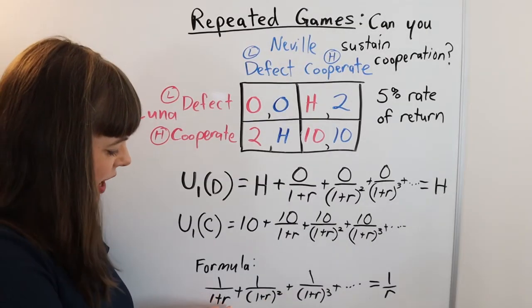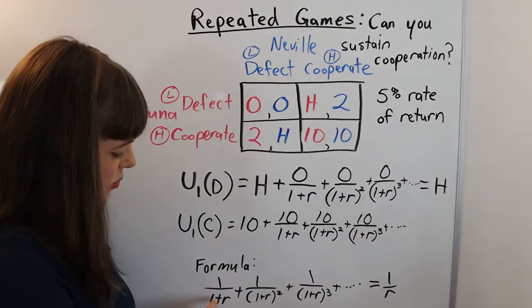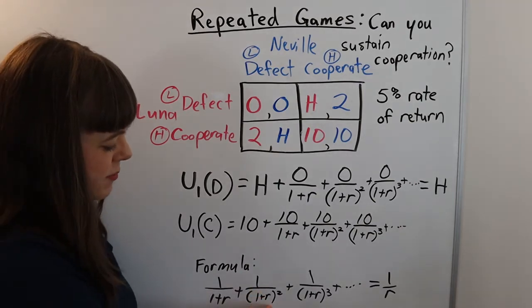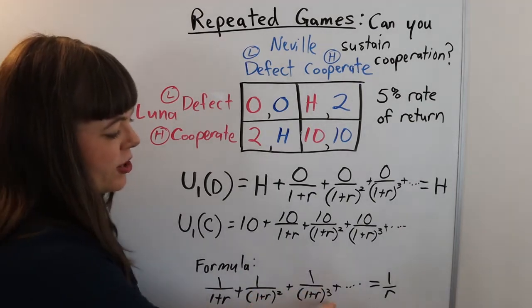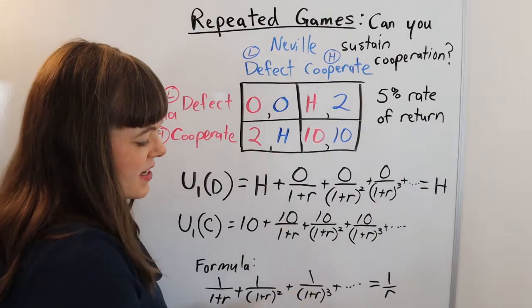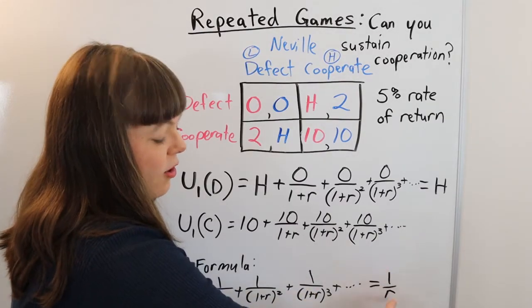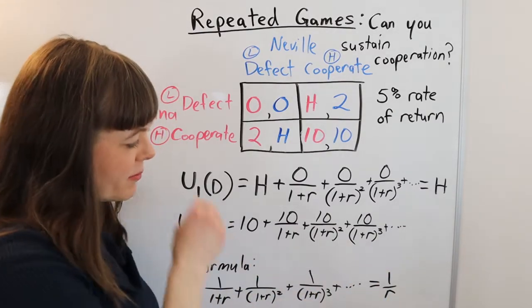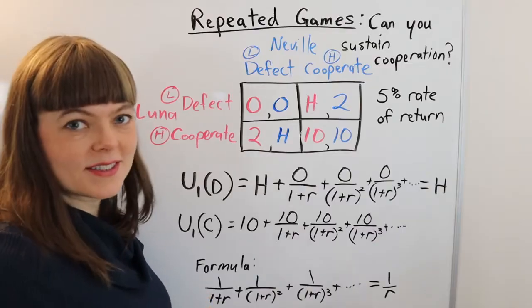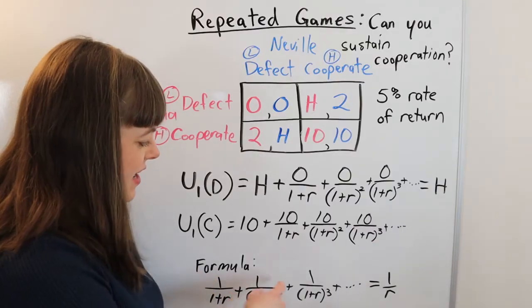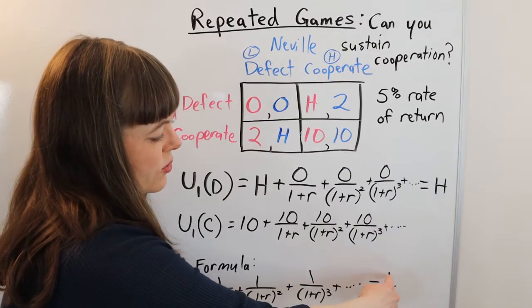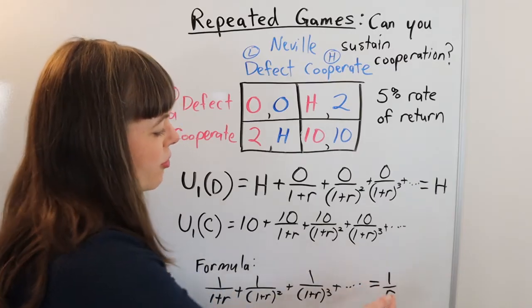And that formula is if you have an infinite series that looks like this, 1 over 1 plus r, 1 over 1 plus r squared, 1 over 1 plus r cubed, et cetera, et cetera, that is going to collapse to 1 over r. That's how you simplify that. And of course, if you have something in the numerator like 10, 10, 10, then this is going to collapse to 10 over r.